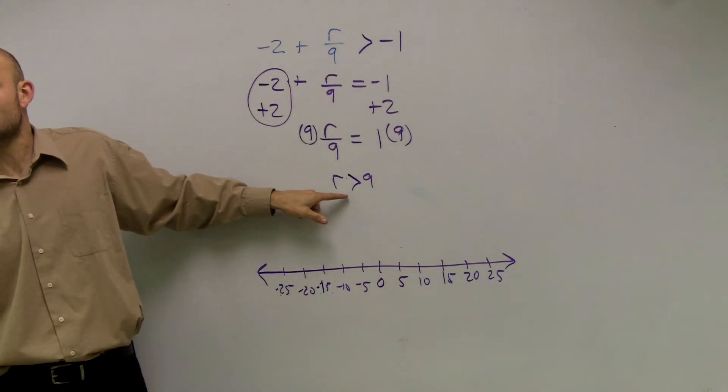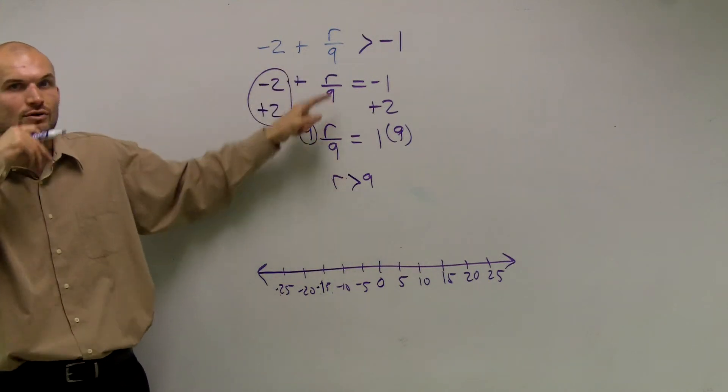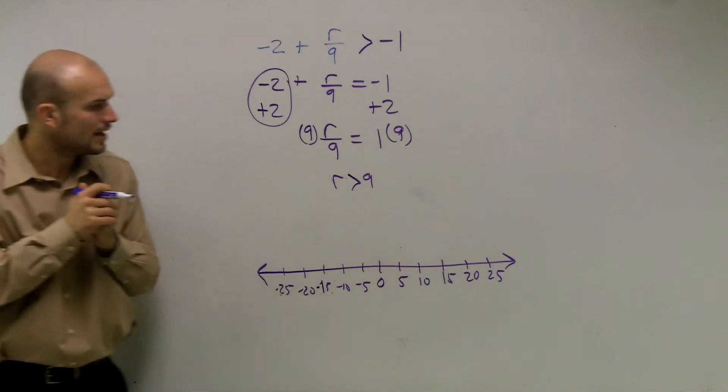Well, here, we multiply by a positive 9. So my symbol is going to remain the same. OK? But just be careful, guys. If you do multiply or divide by a negative number, make sure you go and take a look at the symbol and make sure it's reversed.